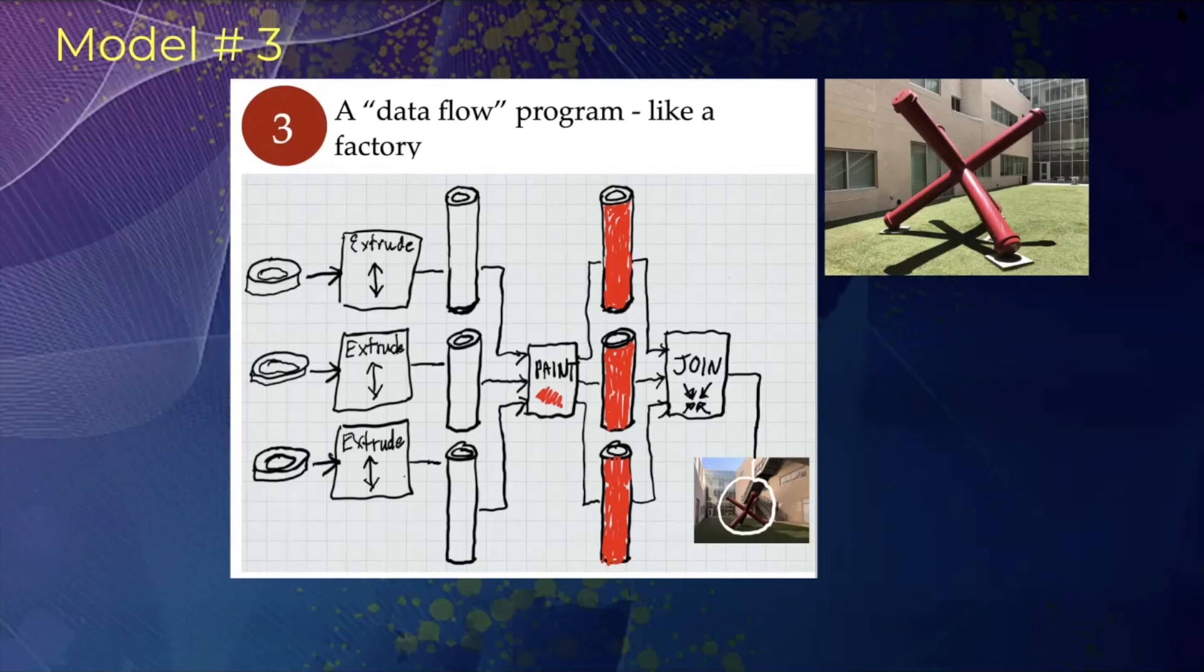Then these three pipes go into a painting machine and come out red. The three red pipes then go into a join machine and they come out as the love jack in the lower right hand corner.